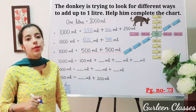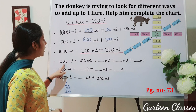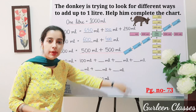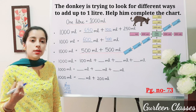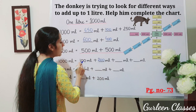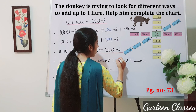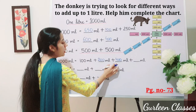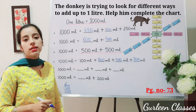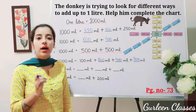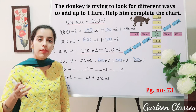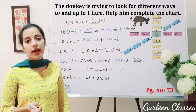One thousand milliliter equals 100 milliliter plus dash plus dash plus dash. Only 100 is written. I can write 200 here: 200 plus 100 is 300. Then I write 400: 300 plus 400 is 700. Then 700 plus 300 is 1000. Students, you have to make the number 1000 milliliter — write any number less than 1000, add them, and subtract the remainder.